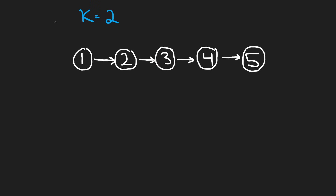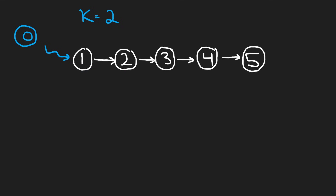So like most linked list problems, I'm going to tell you from the start that we are going to need a dummy node, because we're potentially modifying the head of the list. Like first this is the head, but at the end this is going to be the head. I don't want to deal with edge cases, so just having a dummy node here helps us a lot.